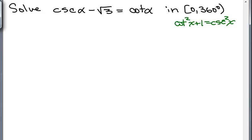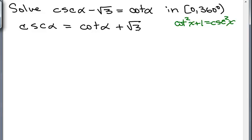I think what I'll do is add square root of 3 to both sides to begin with. The reason I'm going to do that is because it's usually easier to square something when you have a plus sign instead of a minus sign. And now I'm going to square both sides.